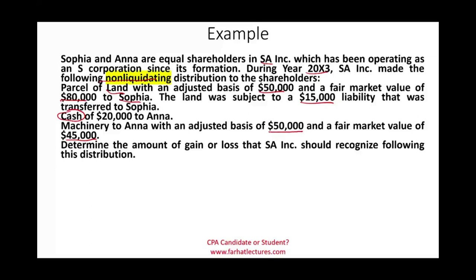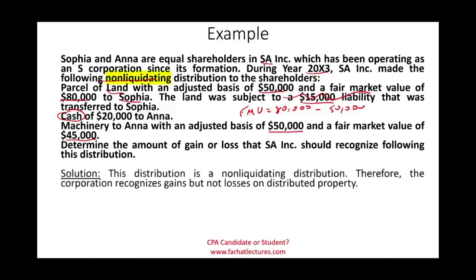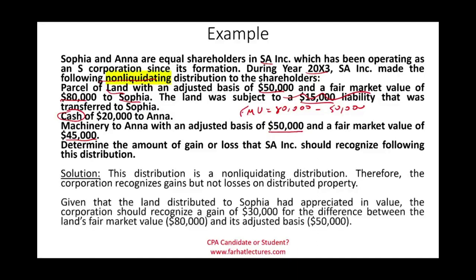Let's start with Sophia. We distributed land with a fair market value of $80,000 minus the adjusted basis of $50,000. When computing the gain or loss for the corporation, the liability has nothing to do with the gain or loss. Therefore, we have a gain of $30,000 — the difference between $80,000 and $50,000.